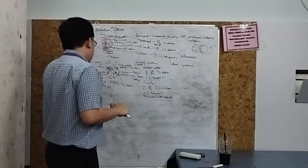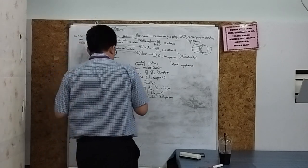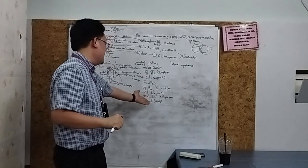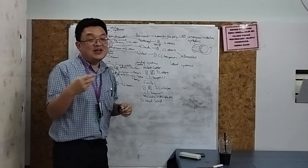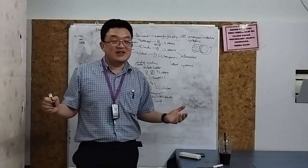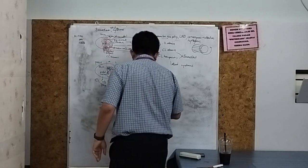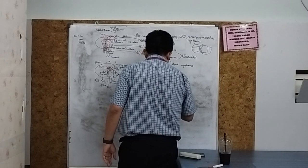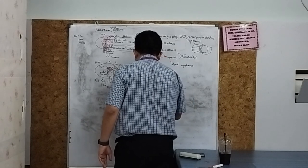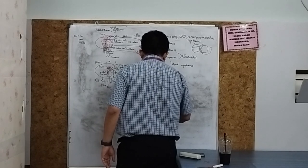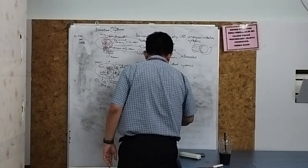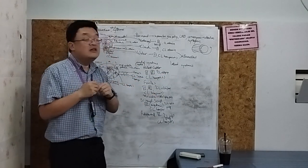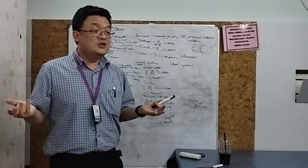The rarer medial pontine syndromes include Brissaud-Sicard syndrome — seventh nerve fasciculations with contralateral loss of vibration and proprioception and contralateral hemiparesis. Raymond syndrome is similar but the seventh nerve is spared — only sixth nerve palsy plus contralateral vibration and proprioception loss and contralateral hemiparesis. Notice the common pattern: all ventral pontine syndromes share contralateral hemiparesis and contralateral loss of vibration and proprioception.